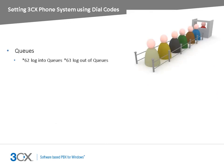If you are an agent for a call queue, you need to log into the queue to let the phone system know that you are available to take calls. Dial star 62 to log into the queues. Alternatively, dialing star 63 will log you out of all queues you are currently a member of.